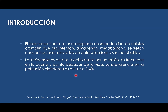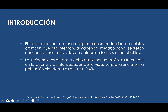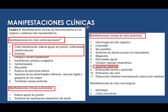Continuamos con el feocromocitoma, una patología poco común, una neoplasia neuroendocrina de células cromafines que básicamente van a sintetizar las catecolaminas y sus metabolitos. La incidencia se ve de 2 a 8 casos por millón y la prevalencia de la población hipertensa es de 0.2 a 0.4% aproximadamente. Dentro de las características, básicamente son pacientes jóvenes que han tenido diagnóstico de hipertensión arterial sin causa aparente. Las manifestaciones clínicas incluyen en la parte cardiovascular: crisis hipertensiva, edema agudo de pulmón, enfermedad cerebrovascular, arritmia; en la parte pulmonar: insuficiencia respiratoria aguda; y en la parte abdominal: alteraciones intestinales.